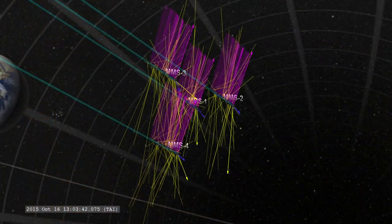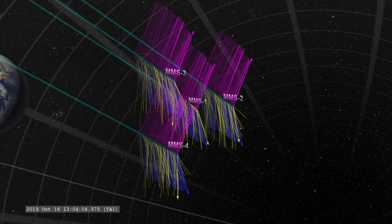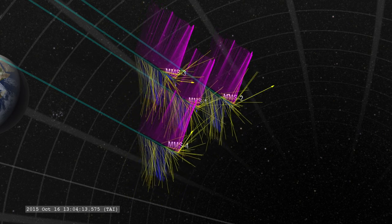In only a few seconds, MMS collected hundreds of observations of the way the magnetic fields and particles were moving, represented with arrows in this visualization.